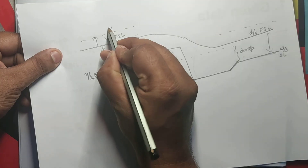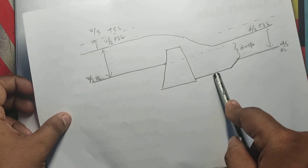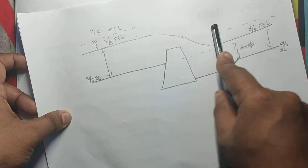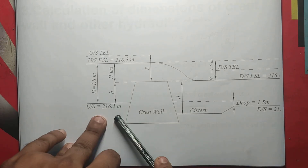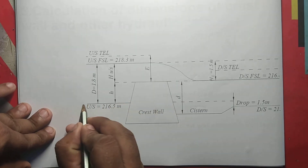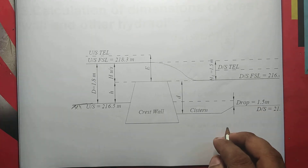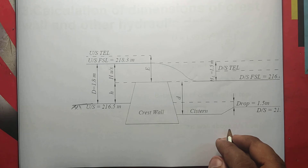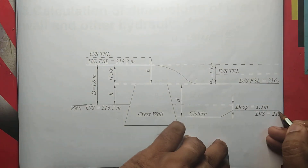This is TEL — upstream TEL and downstream TEL. Crest wall, cistern, bed level, full supply level, and TEL. Upstream TEL is also shown. Now let's take a look at the markings. Upstream bed level is 216.5 meters. Downstream bed level is 215.0 meters.